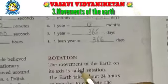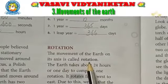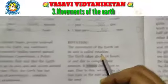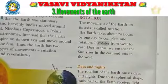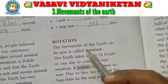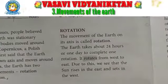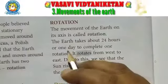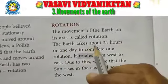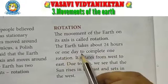The movement of the earth on its axis is called rotation. The earth rotates on its axis. The earth takes about twenty-four hours, or one day, to complete one rotation.